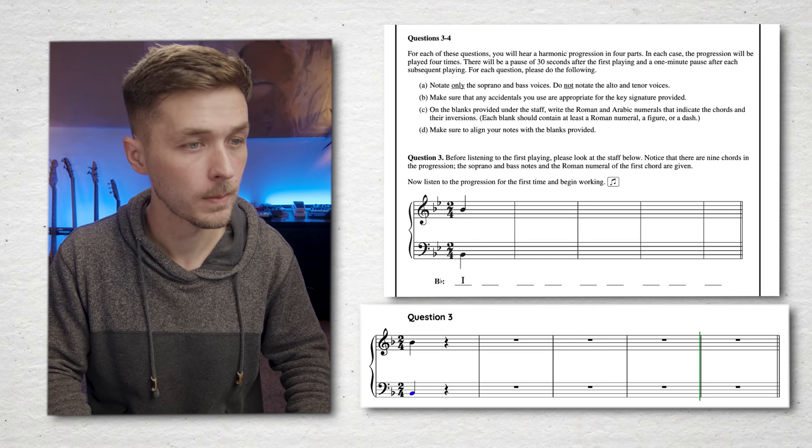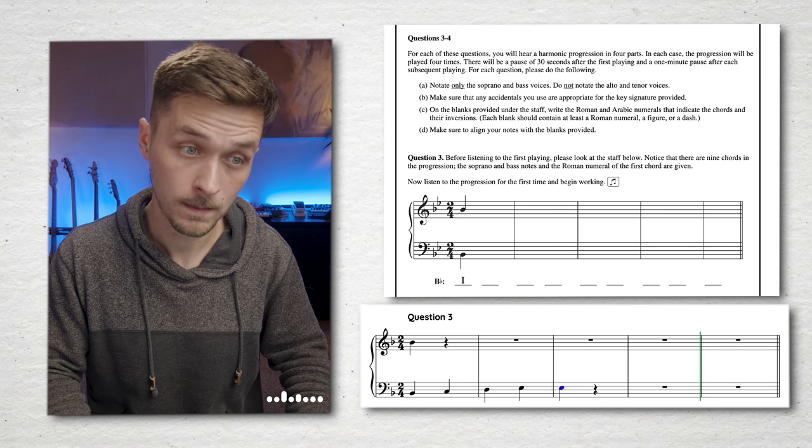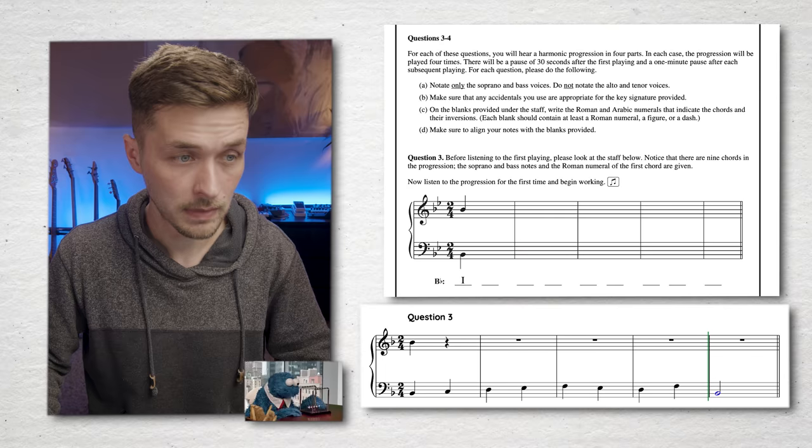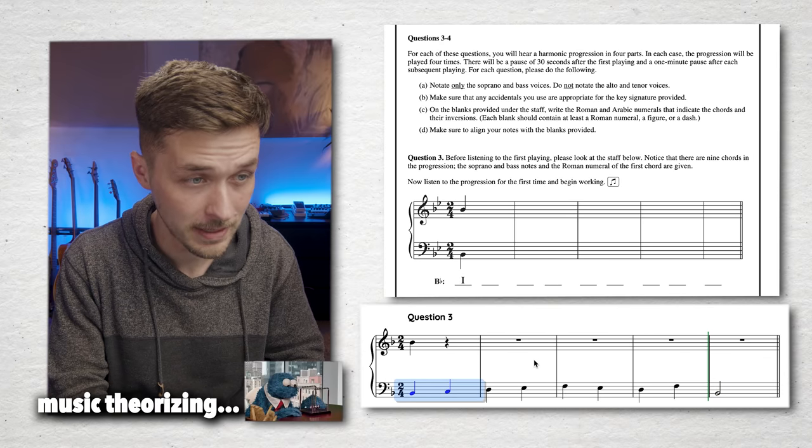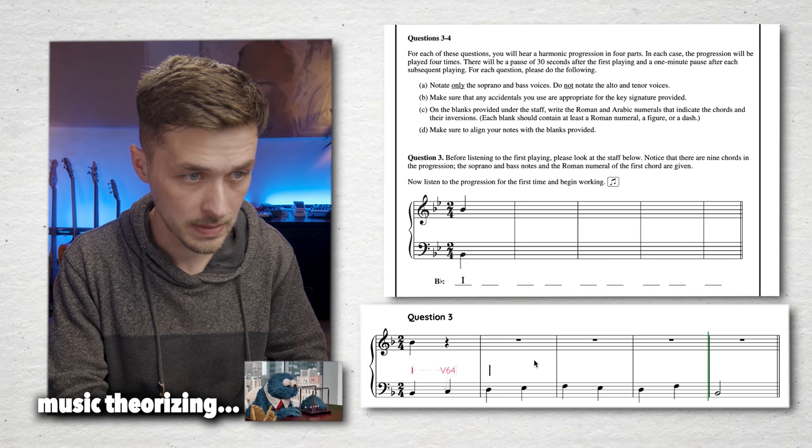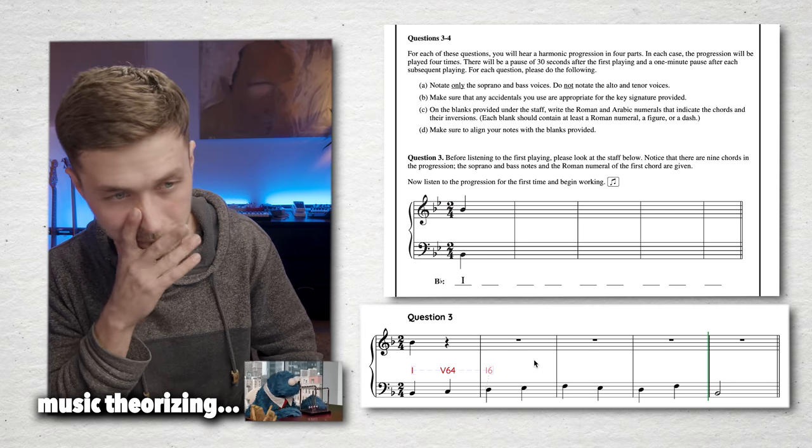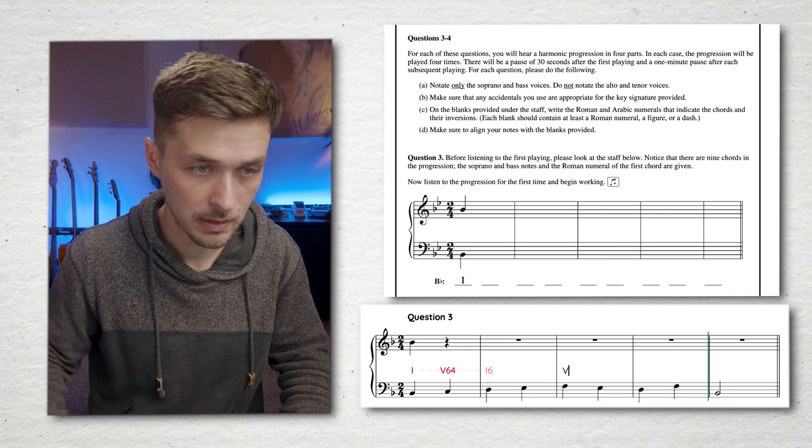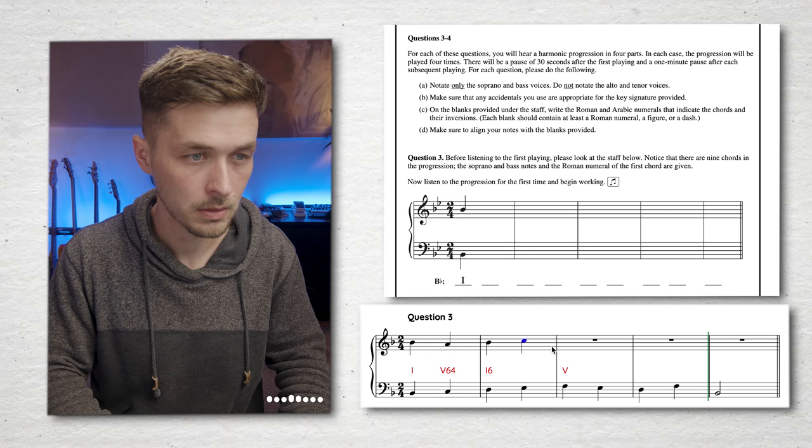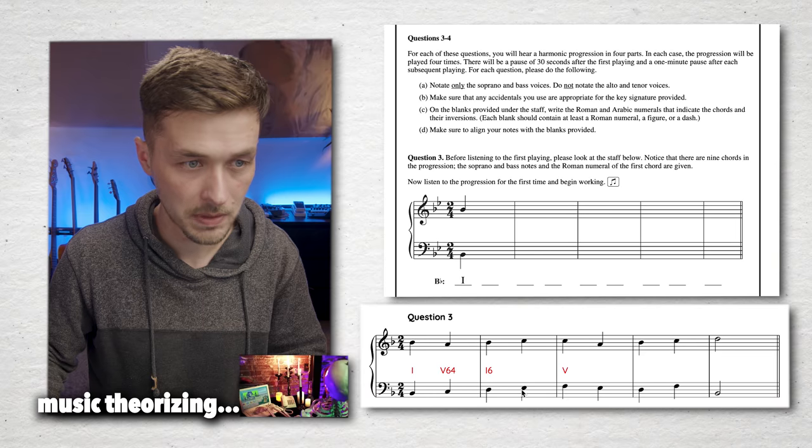Now listen to the progression for the first time and begin working. Okay. Got that bass line. Now I've got to remember what the figured bass for that is. That's like, that's one. That's a five. It's like an F over C is the name of the chord. That's a one six. It's a B flat over D. That was an E flat. What was that? That was a five. The progression for question three will now be played a second time. Hell yeah. You just need to label these bad boys.